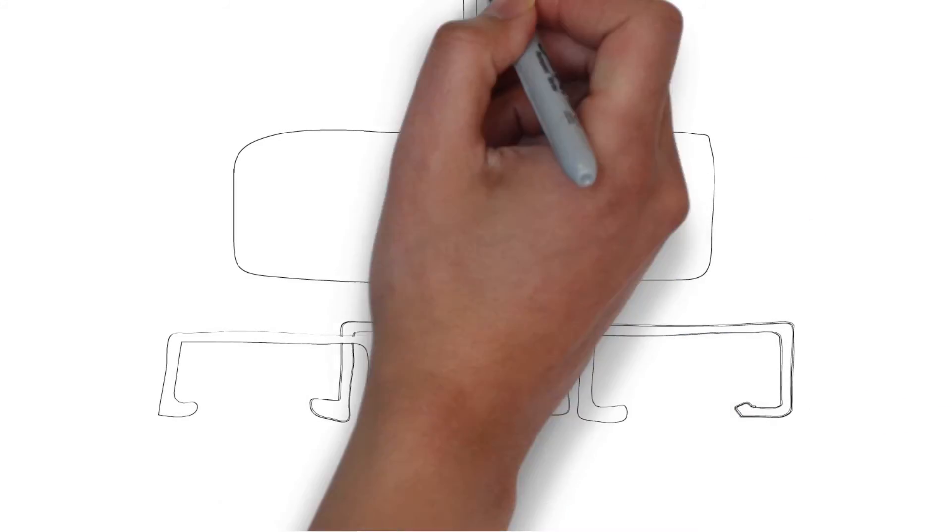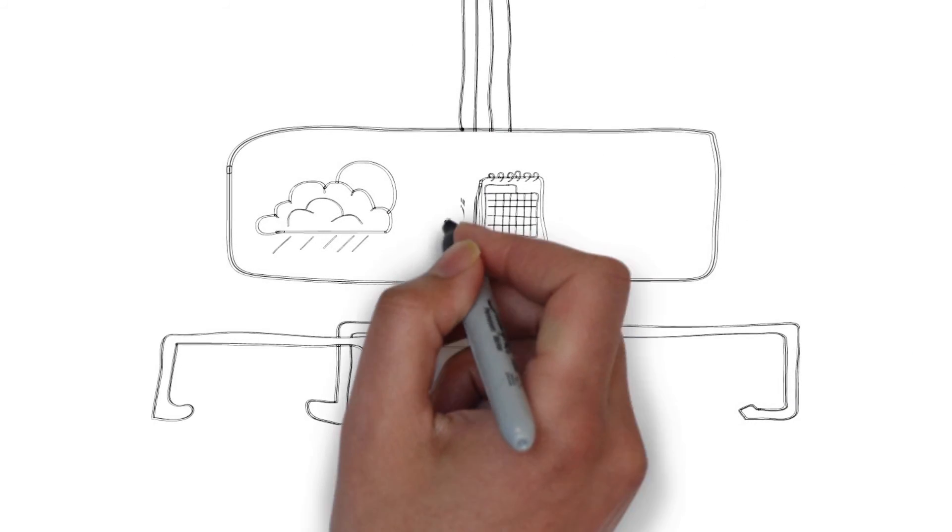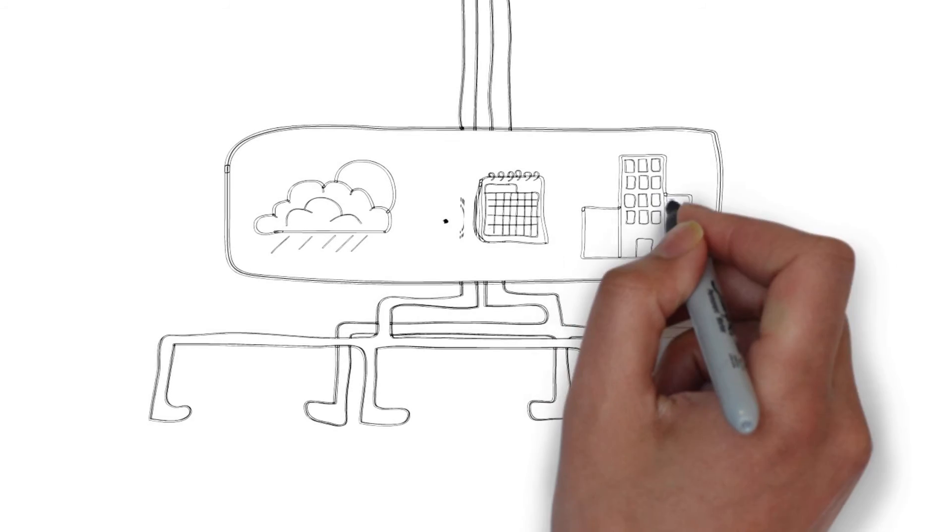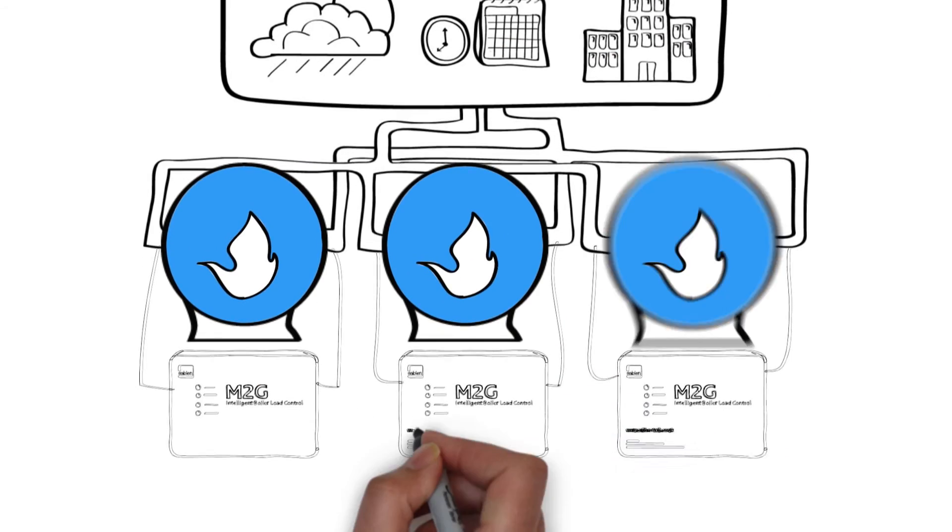Unlike other systems, M2G micromanages the boilers, monitoring each individual boiler rather than the performance of all the boilers as a whole. That's how it identifies and prevents dry cycling.